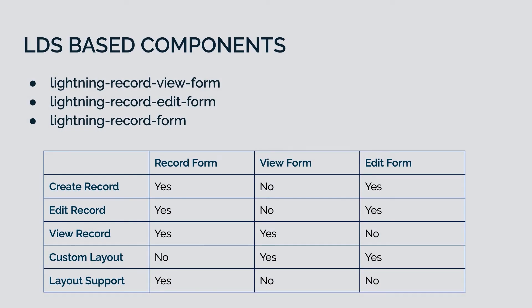Now let's talk about some of the base components which are based on LDS. These components are very helpful when you want to create forms on the UI — maybe to create a new record, or if you want to edit or view an existing record. There are three components based on LDS. The first is lightning-record-view-form, which mainly focuses on viewing an existing record. The second is lightning-record-edit-form, which mainly focuses on editing an existing record. The third is lightning-record-form, which is a combination of both.